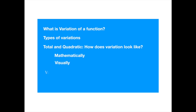Roughly speaking, the variation of a function means the activeness of the function. It just represents the total movements or deviations in the function over an interval. The mathematics might look a bit complicated for a minute or so, but it will become very obvious very soon, once you have seen it in action.